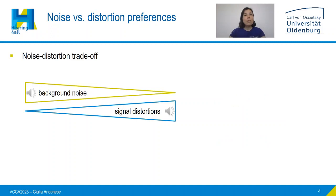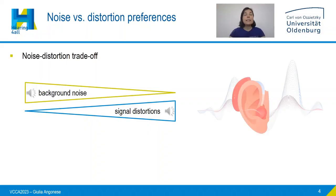This trade-off between noise and distortion is introduced by single microphone noise reduction algorithms in hearing aids. These algorithms provide an increase in signal-to-noise ratio by reducing the surrounding noise, but with this they also introduce distortions to the signal.